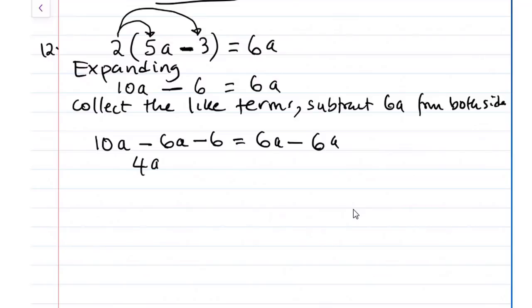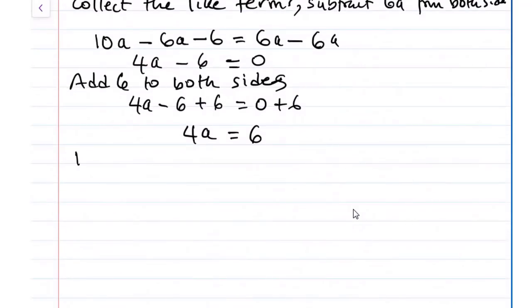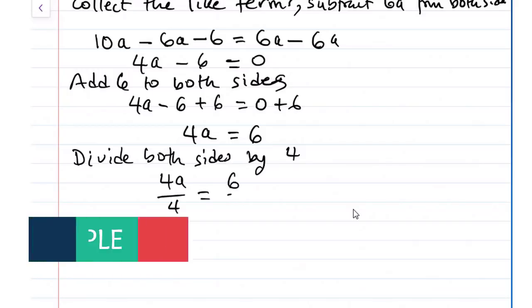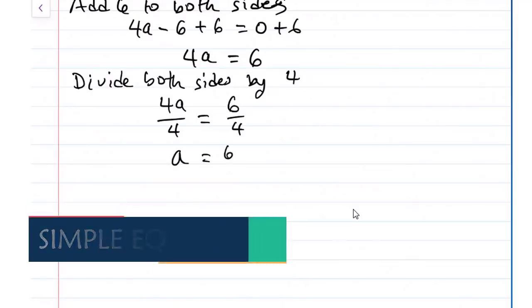For us to determine the value of a, we are going to add 6 to both sides. So that will be 4a minus 6 plus 6 equals to 0 plus 6. So we have 4a equals to 6. And if we solve further, we divide both sides by 4. So we have 4a over 4 and 6 over 4.